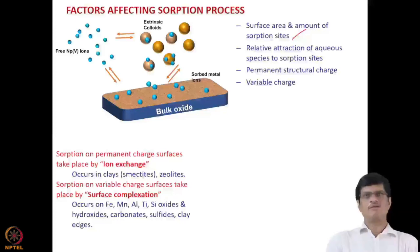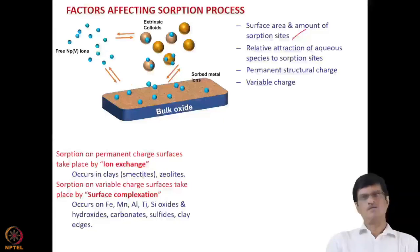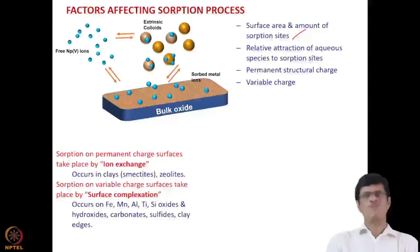As shown here, you have this bulk mineral phase. How many sites are there which are binding to the metal ion? That also determines the amount of actinide or metal ion taken up by the bulk mineral phase. Then there is the relative attraction of the aqueous species to the surface sites — other species present in the aqueous phase are also going to the surface sites. Then permanent structural charge and also variable charge are the factors deciding the adsorption process.